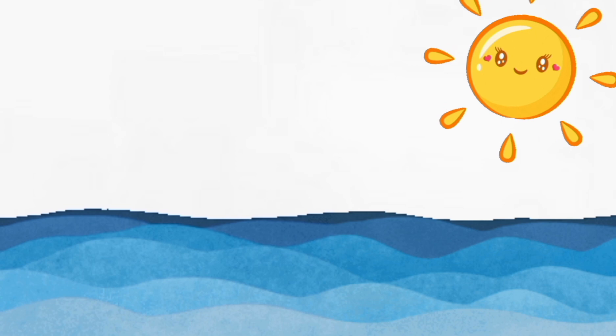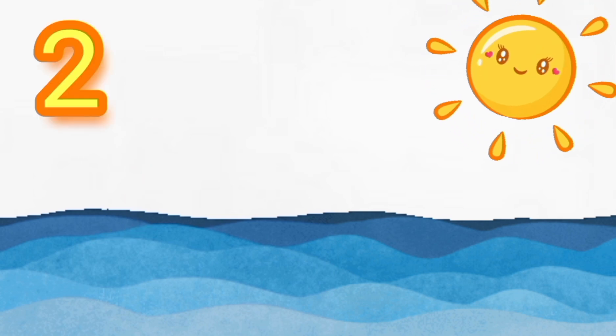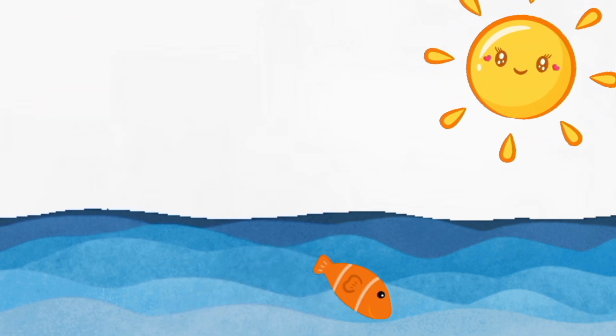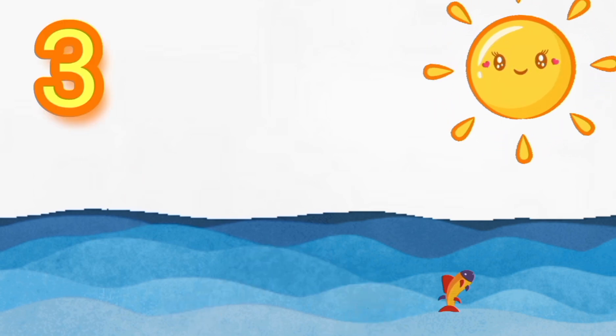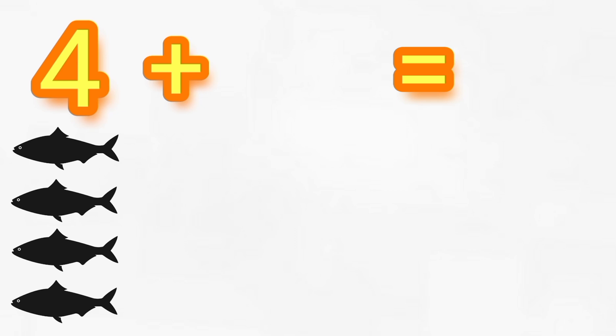Let's find some new numbers and start again. Let's count the amount of fish we see. One. Two. Three. Four. And I think that's it. So the first number in our addition problem is four.